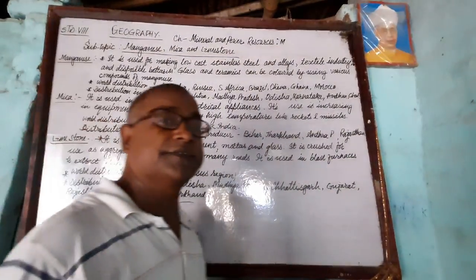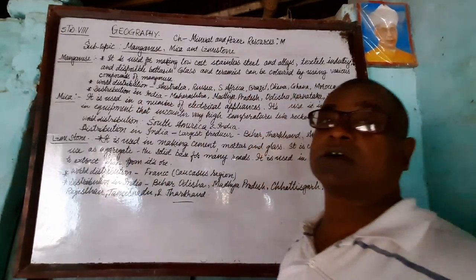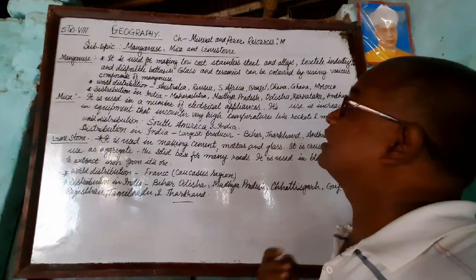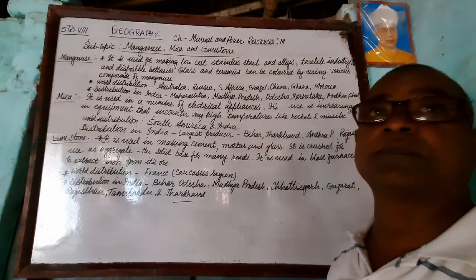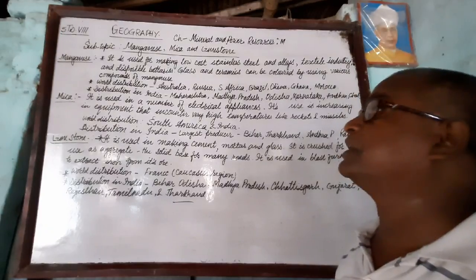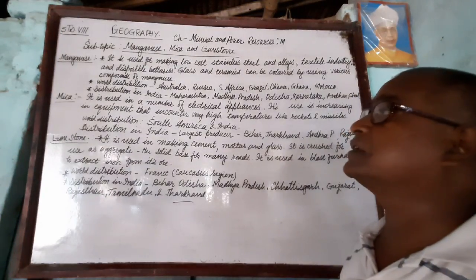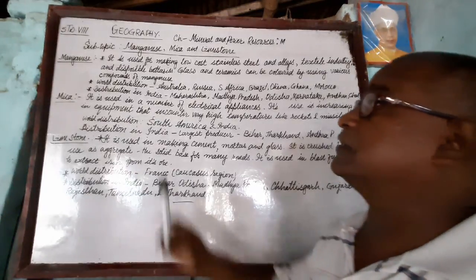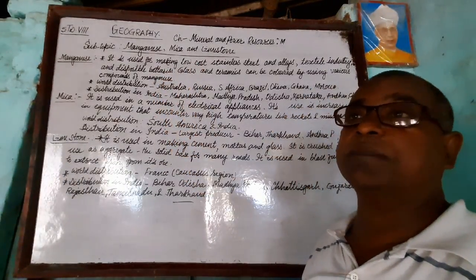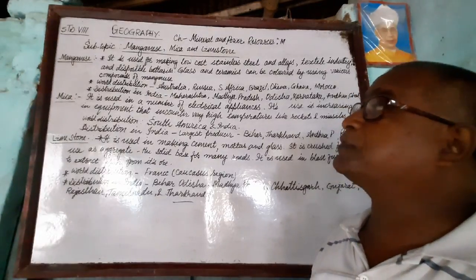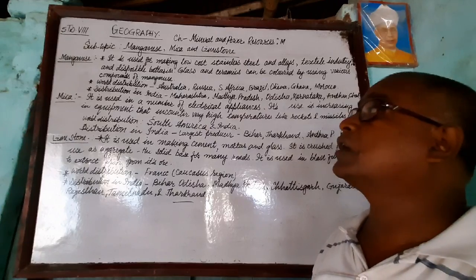Good morning viewers. Today we are going to study the topics of minerals and power resources. In previous videos we discussed different topics. Today we will discuss manganese, mica, and limestone — which parts of India and the world they are found in, and what their uses are.